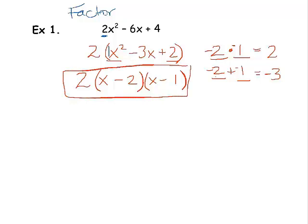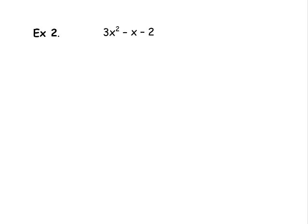So again, whenever this a value isn't a 1, consider factoring out a GCF. In the next example, first thing I should notice is that a value is not 1. So let's check for a GCF. 3, negative 1, and negative 2 don't have any factor in common except 1. So I don't have a GCF to factor out here.